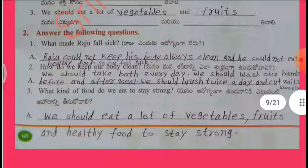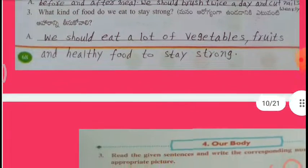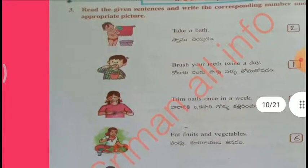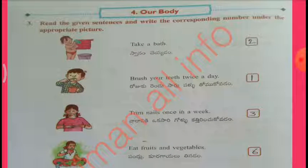Answer the following questions. What made Raju fall sick? Raju could not keep his body clean and he could not eat healthy food, so he fell sick. How do we keep our body clean? We should take bath every day, wash our hands before and after meals, brush twice a day, and cut nails weekly. What kind of food do we eat to stay strong? We should eat a lot of vegetables, fruits and healthy food.